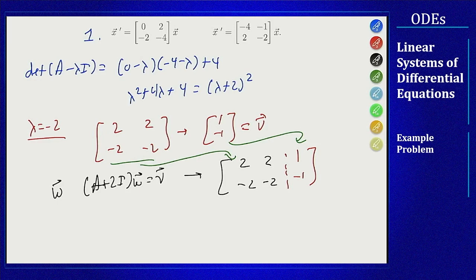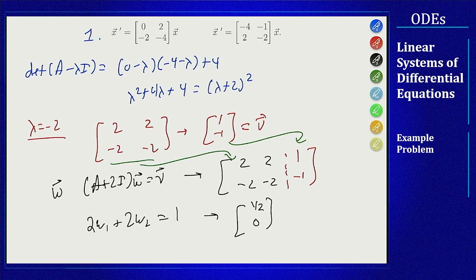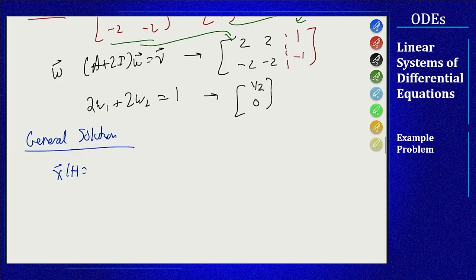So what do I get from that? The rows will cancel because they're the same to a minus sign, so I'm left with 2w₁ plus 2w₂ equals 1. For the vector that I'll work here is one half and zero, w₁ is one half, w₂ being zero.